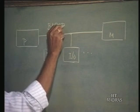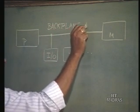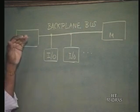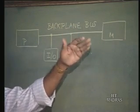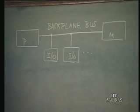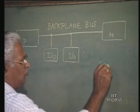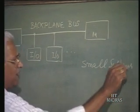On the backplane you have the necessary slots — you find the processor slot, the memory slot where the processor board and memory board go, and you also find the I/O slots on them. So generally that is what you have, and specifically in small systems, what you have is essentially a backplane.